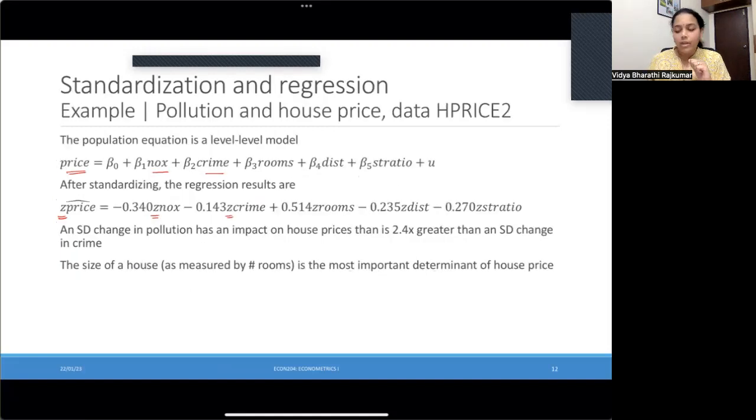To give you an example, if we were regressing the price of houses on a bunch of variables, NOx here measures pollution, crime measures criminal activity in that neighborhood, and then you have a bunch of characteristics that are attributes of the house. The number of rooms, distance to a particular place, and a few other characteristics. That's our original regression model. And now when we standardize every single variable and then run the regression, notice that all of the variables now have a z prefix, telling us that these are all the standardized variables.